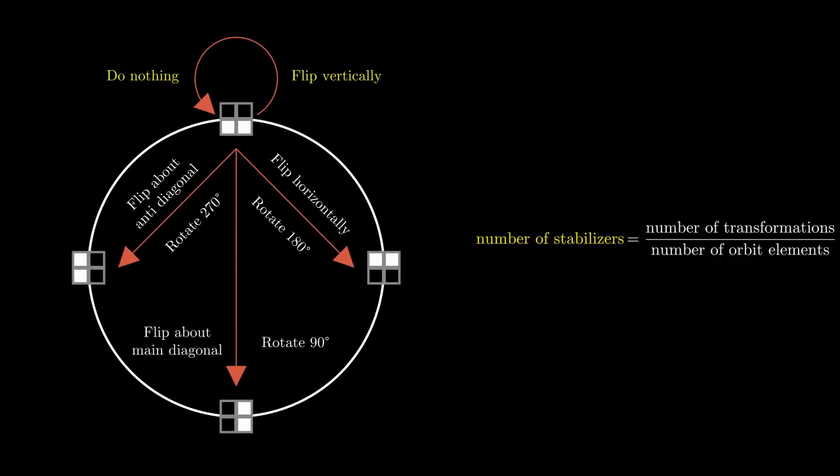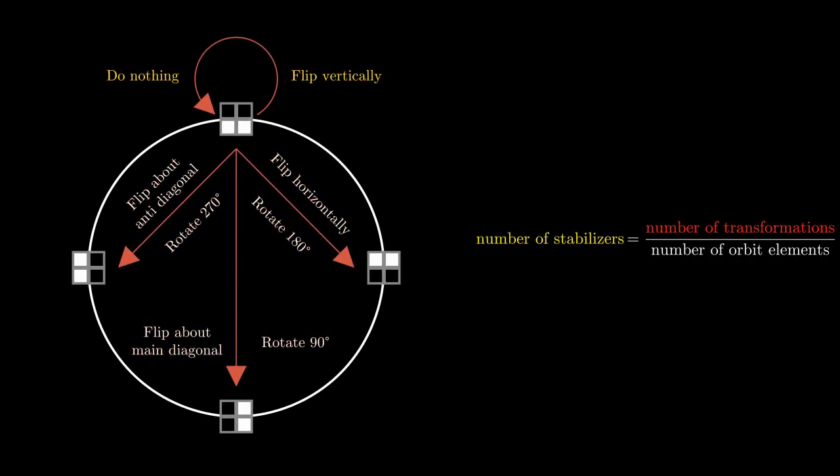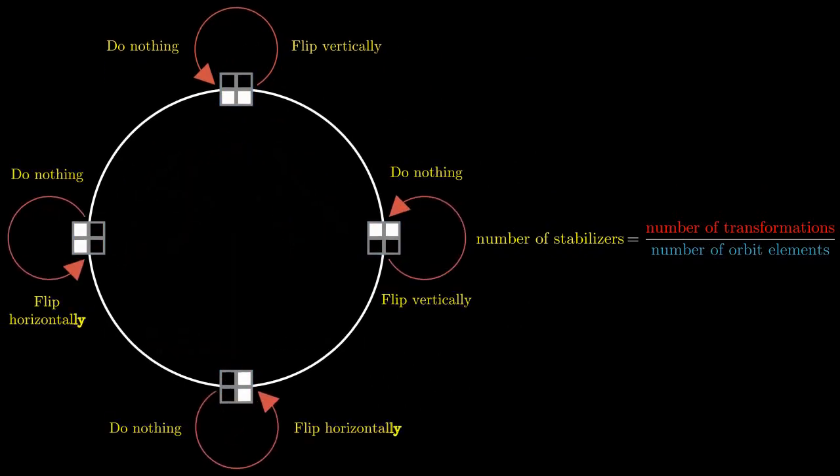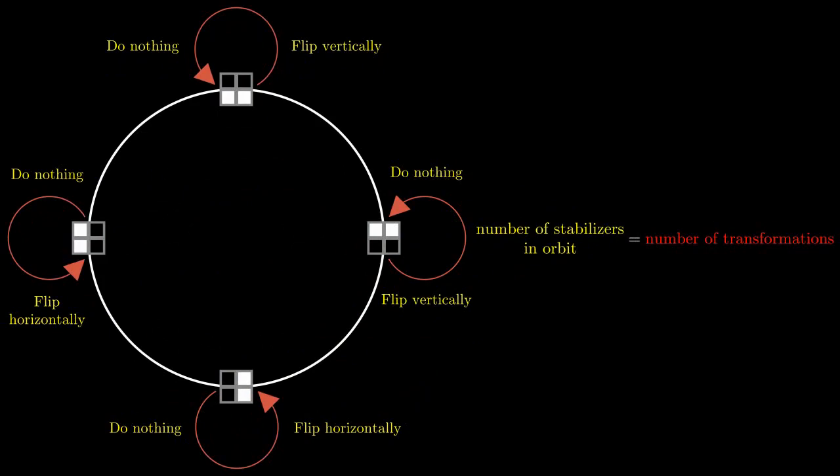For each coloring, the number of stabilizers must be equal to the number of transformations divided by the number of elements in the orbit. That means that, if we add up the number of stabilizers for every element in the orbit, we'll get the number of transformations.